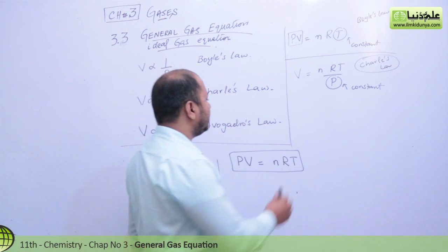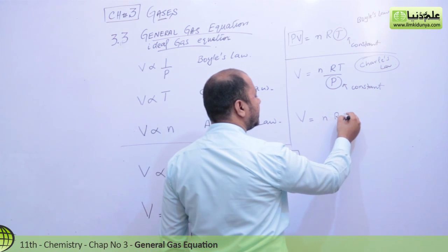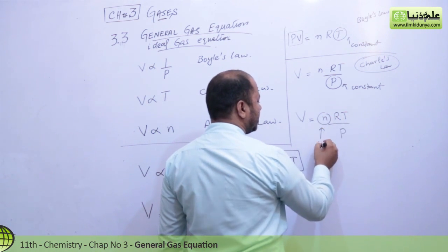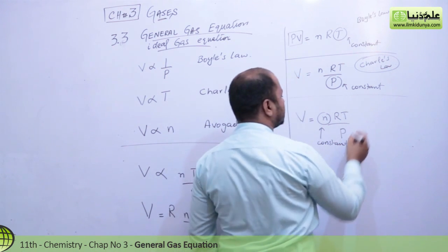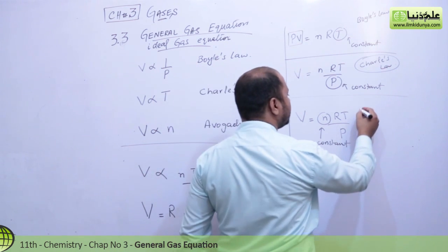Because in Charles' law, pressure was constant. After that, if we derive this in the form of Avogadro's law, we just need to take n and T constant. nRT over P, this thing is acting as a constant, and that is known as Avogadro's law.